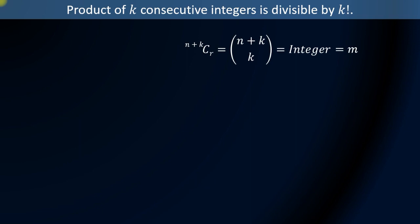Here n, k and m are natural numbers. Now n plus k choose k can be written as n plus k factorial over the product of k factorial and n factorial, and it is equal to m.